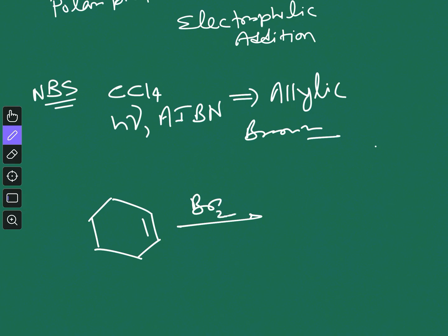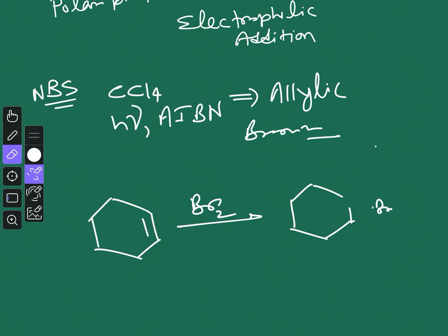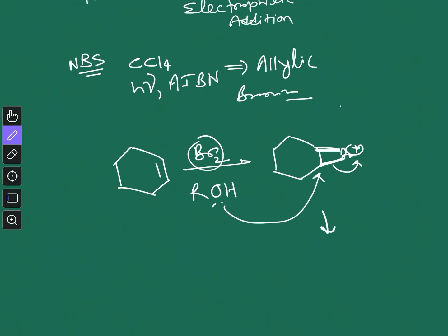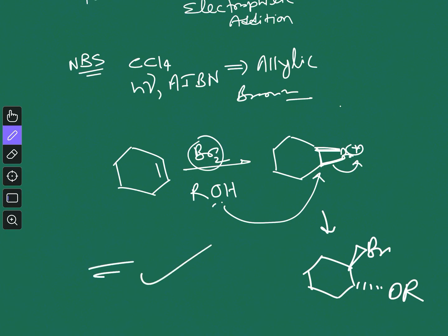Now let's look at how the electrophilic addition reaction occurs. In the presence of NBS, Br2 is generated. According to the initial drawing, the bromine approaches above the plane of the double bond and generates a bromonium ion. Then the ROH opens this bromonium ion, and you get the corresponding addition product.